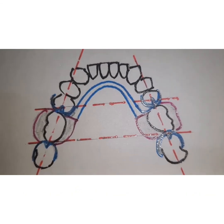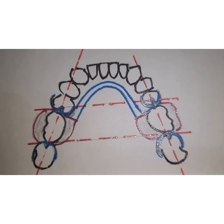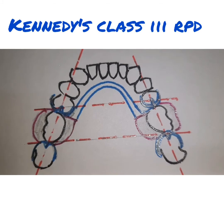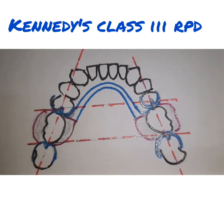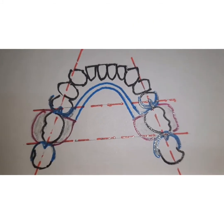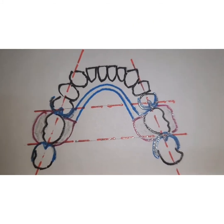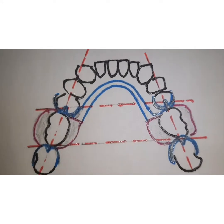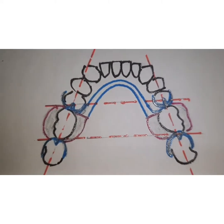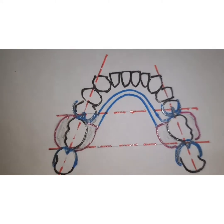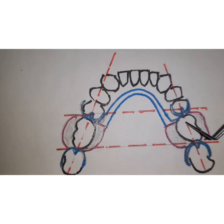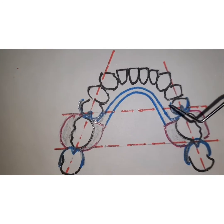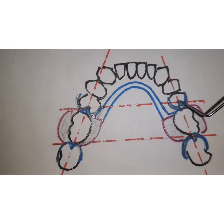Now, what is the class 3 situation? Kennedy's class 3 is an edentulous space which is bounded by teeth both anterior and posterior to it. As you can see in the figure, you have this edentulous space which is bounded by teeth on both the sides.